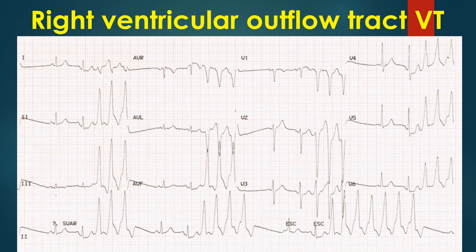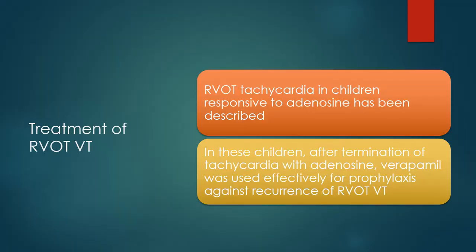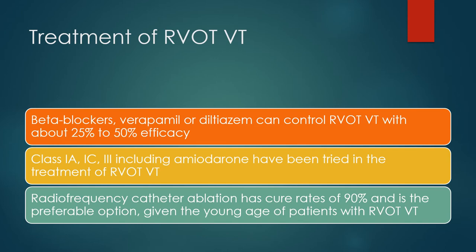RVOT VT occurs in repetitive runs having left bundle branch block morphology and inferior axis. RVOT tachycardia in children responsive to adenosine has been described. After termination of tachycardia with adenosine, verapamil was used effectively for prophylaxis against recurrence. Beta blockers, verapamil, or diltiazem can control RVOT VT with about 25 to 50% efficacy.